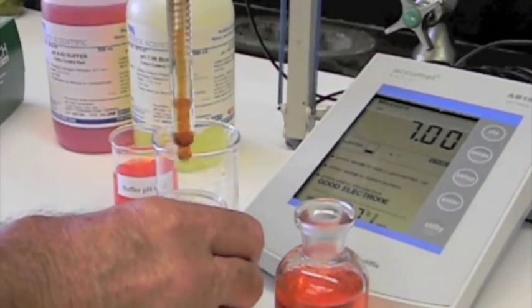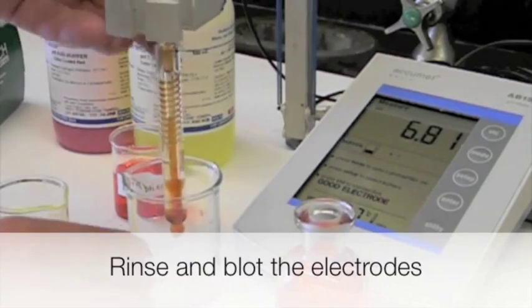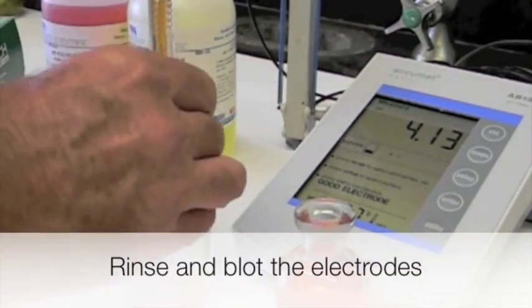Rinse and blot the electrode. The meter is now ready to use for measuring the pH of food samples.